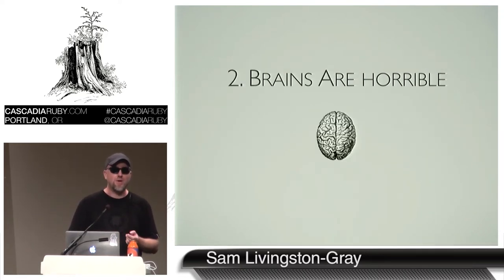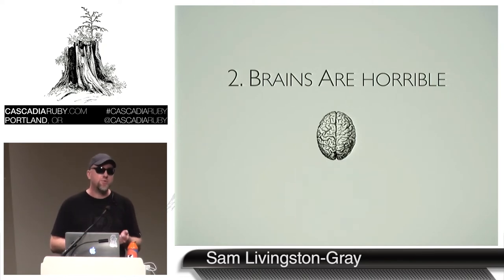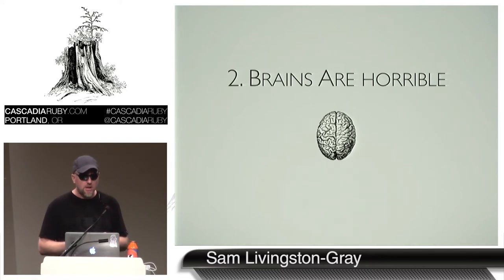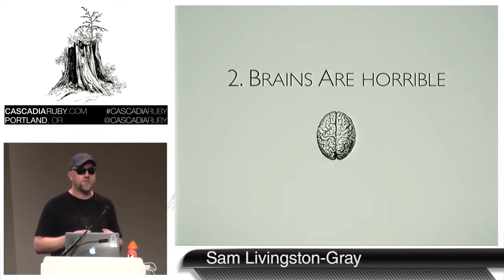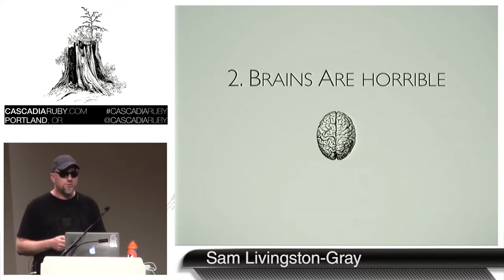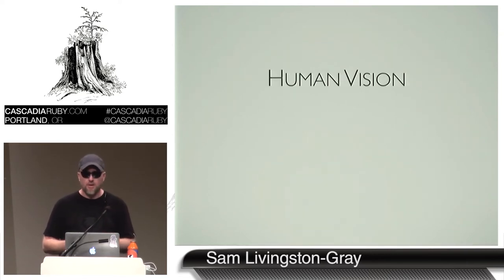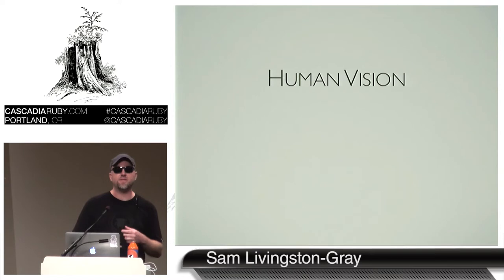Evolution has designed our brains to lie to us. Brains are expensive — the human brain accounts for just 2% of body mass but 20% of caloric intake. That's a huge energy requirement that has to be justified. Evolution does one thing and one thing only: it selects for traits that help an organism stay alive long enough to reproduce. It does not care about getting the best solution — only one that's good enough to compete in the current landscape. And evolution will tolerate any hack as long as it meets that one goal.